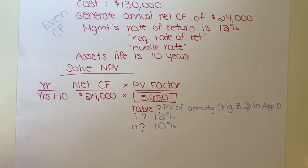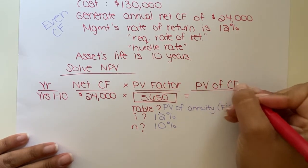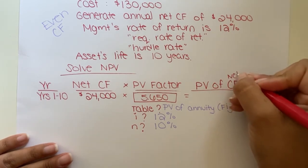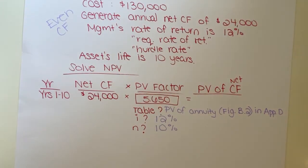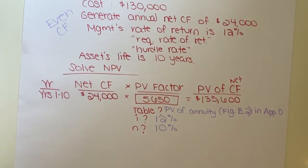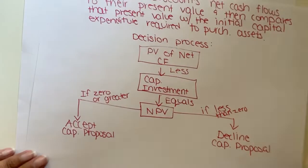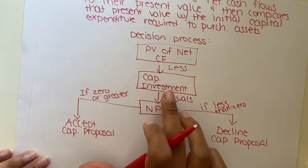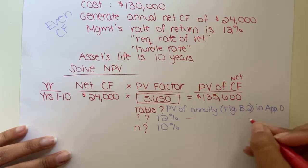Multiply across — this gives us the present value of net cash flows, which is what we were trying to solve because it's the first step on our flow chart. Multiply $24,000 by 5.650. That gives us $135,600. To get to net present value, we subtract our capital investment amount — subtract your investment cost of $130,000.